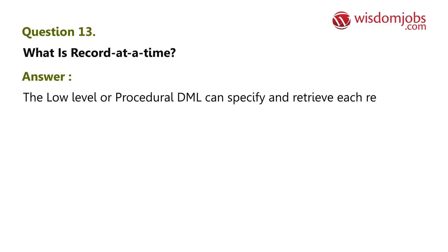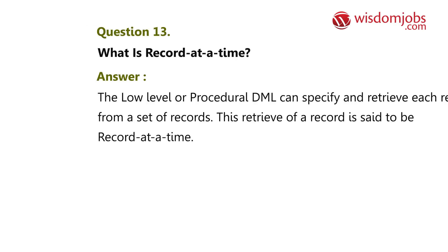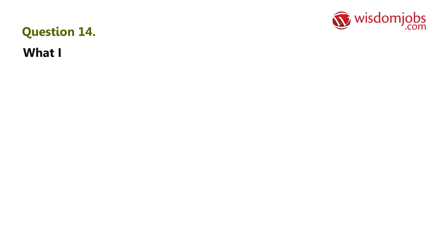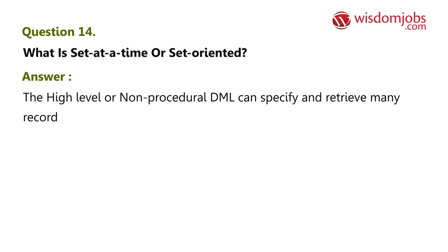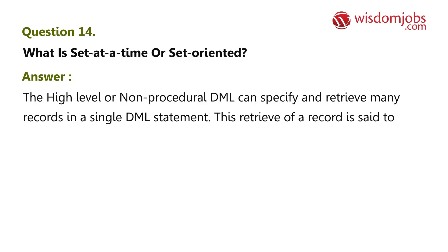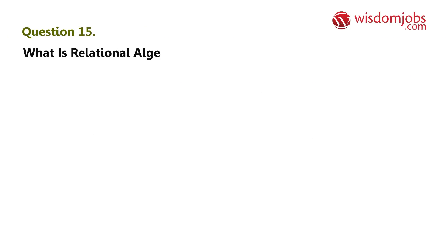Question 13: What is record at a time? Answer: The low-level or procedural DML can specify and retrieve each record from a set of records. This retrieval of a record is said to be record at a time. Question 14: What is set at a time or set oriented? Answer: The high-level or non-procedural DML can specify and retrieve many records in a single DML statement. This retrieval is said to be set at a time or set oriented.